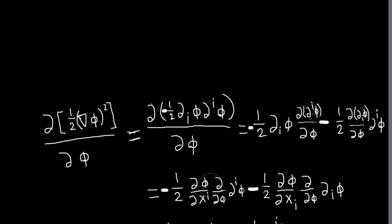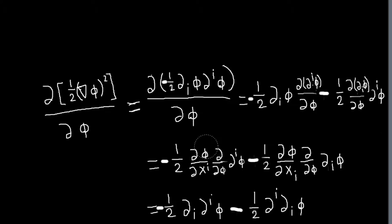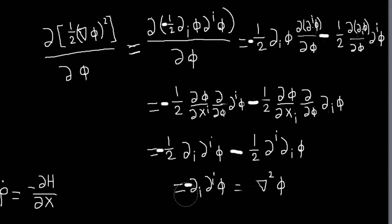But notice this is d phi dxi times d/d phi, that will just be d/dxi. And similarly, this will just be d/dxi with i lower here and i upper here. So d/dxi upper is, in shorthand for that, di with i lower. And this will be di upper. So I have di di phi and di di phi. And these combine, and I end up with the Laplacian of phi.